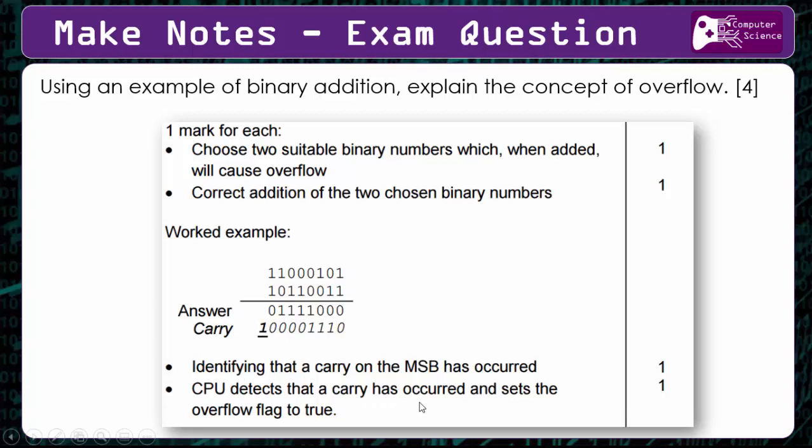So the CPU detects this and sets the overflow flag to true. So you could write a sentence that says, a carry's occurred on the most significant bit, so the CPU sets the overflow flag to true. And then that would get you all four marks.